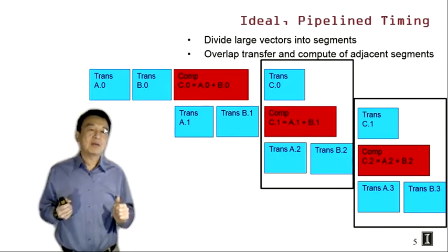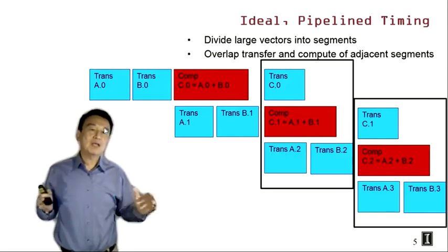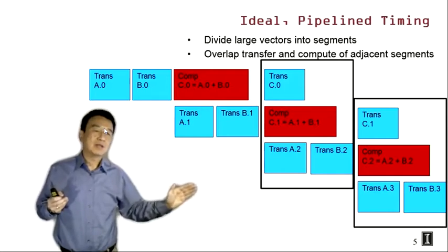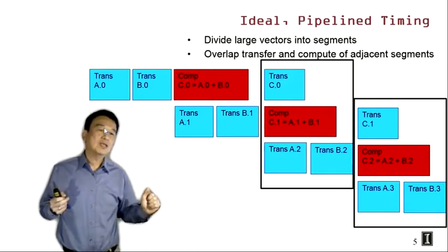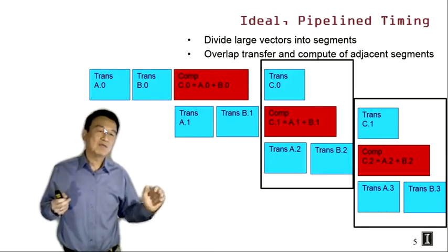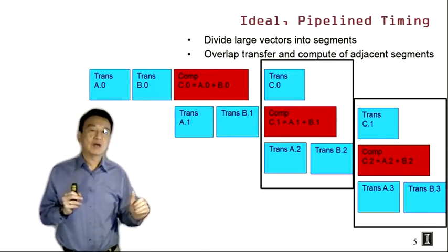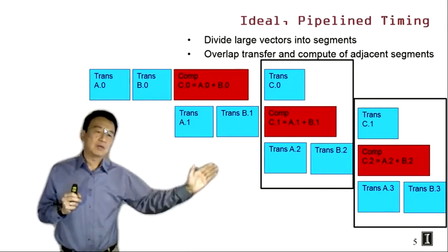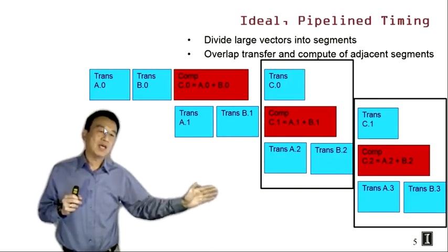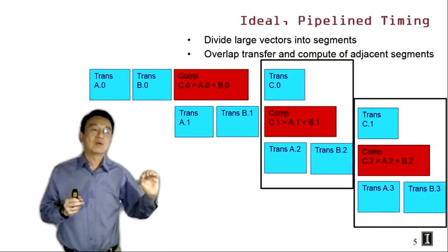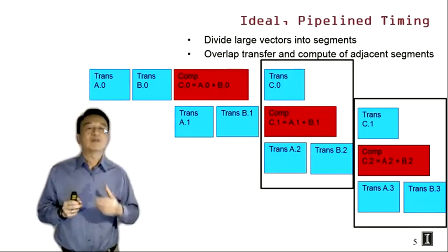This is what we call the steady state of the pipeline. If we divide the data into many segments, this arrangement can continue for a long time. Towards the end of execution, we'll have a ramp-down process where we won't be able to transfer more A and B from host to device because we've run out of segments, and eventually there will be one period where only a C segment is transferred back to the host. This is the ideal pipeline timing we'd like to accomplish.